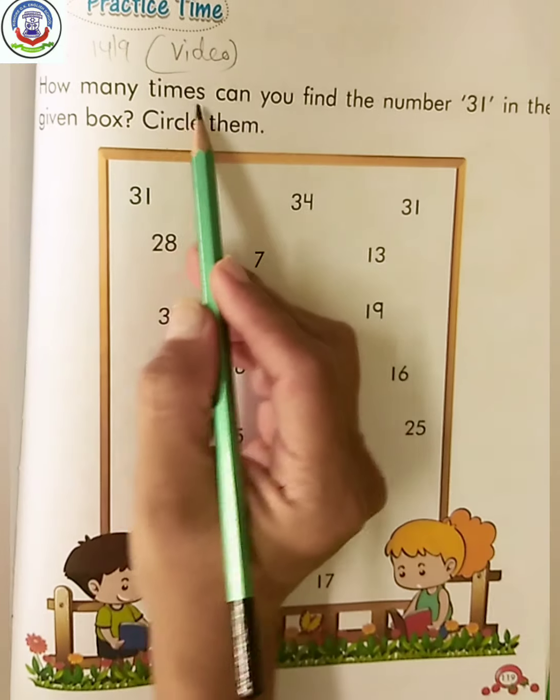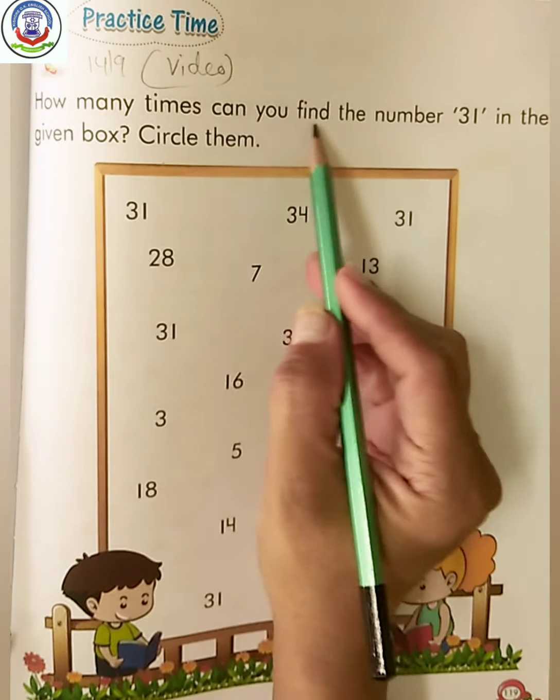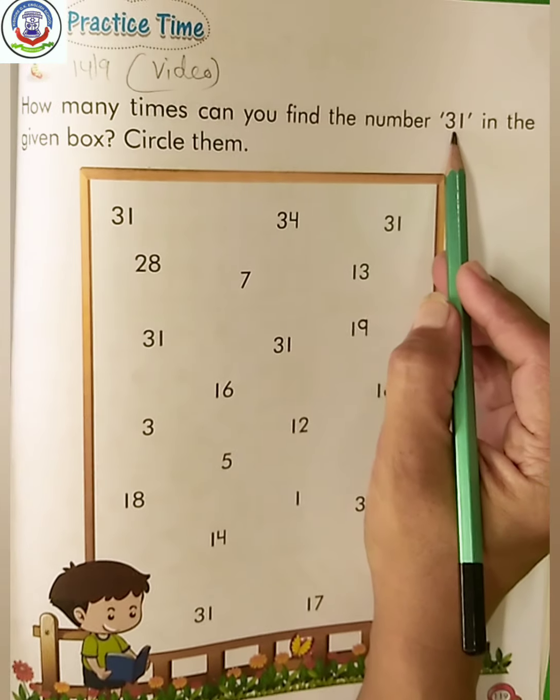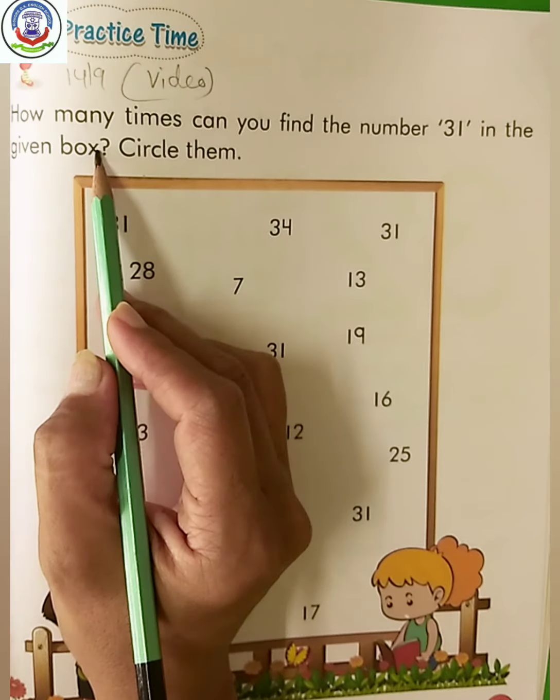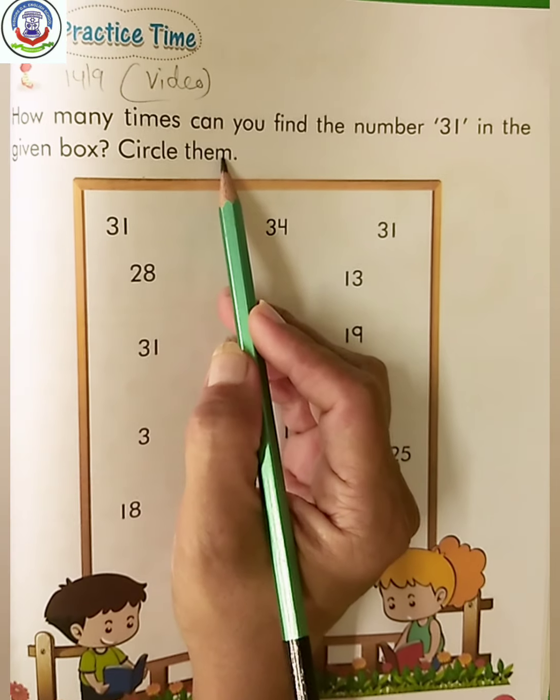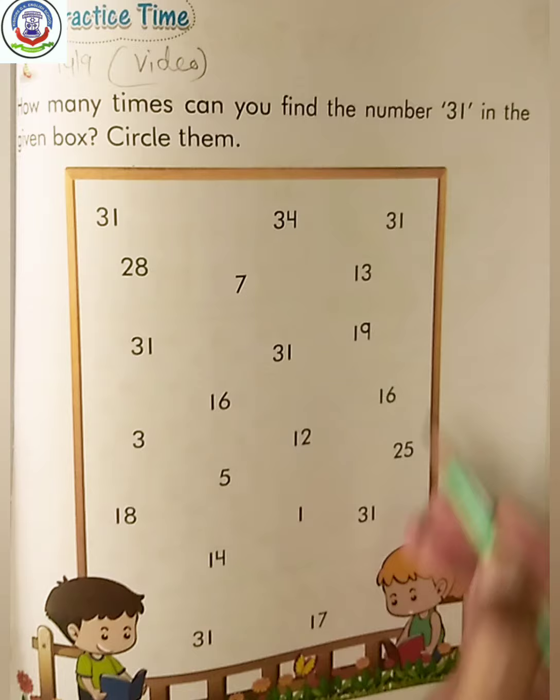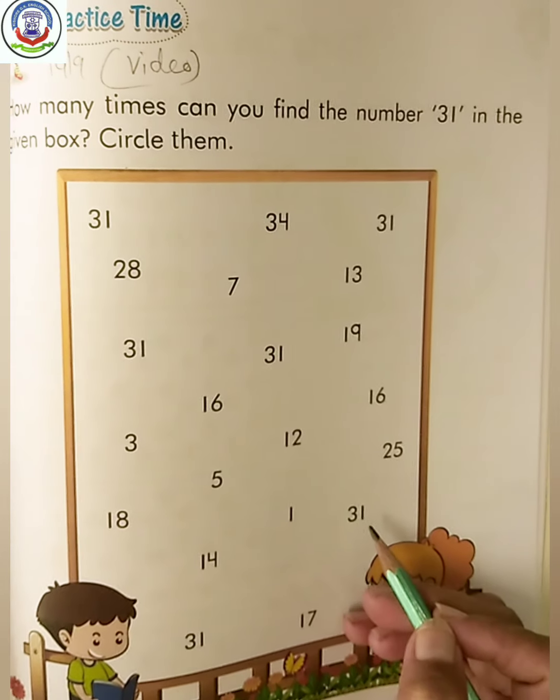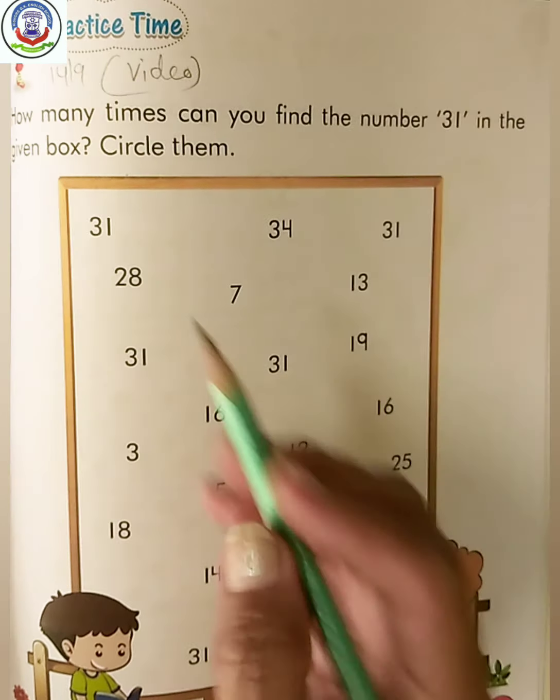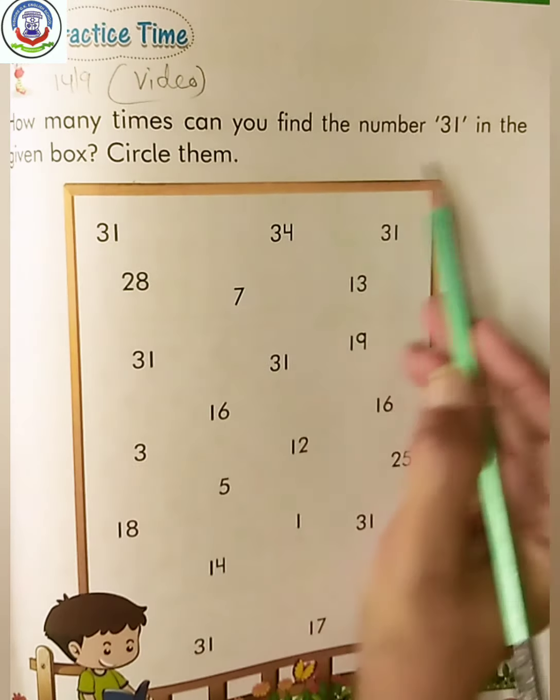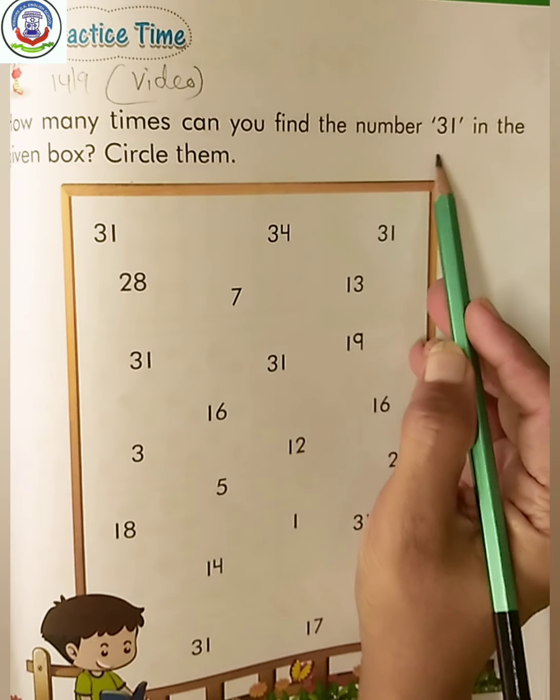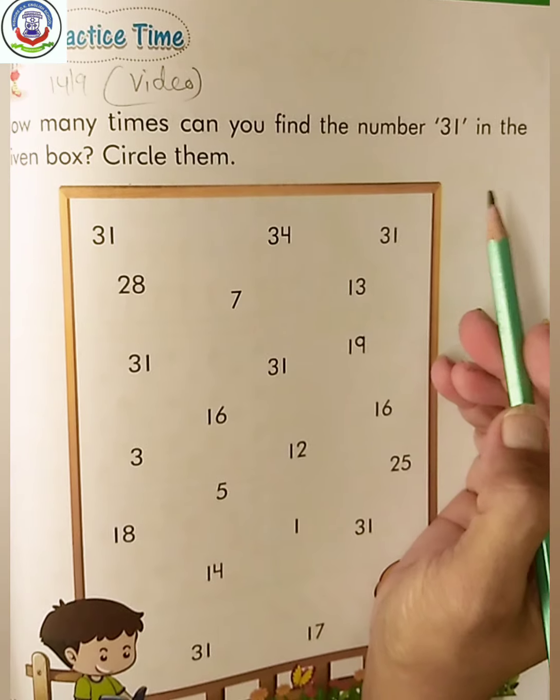How many times can you find the number 31 in the given box? Circle them. Here are a few numbers given in which we have to circle only number 31. So let's start.